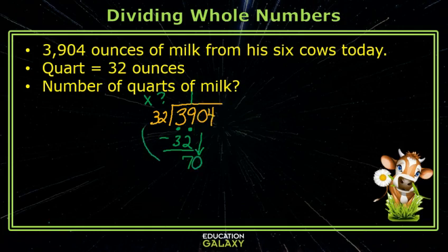Next we need to ask ourselves, how many times will 32 go into 70? I'm not sure, so I'm going to make a list of my multiples of 32. So 32 plus 32 is 64. If I add another 32, that is 96. So this is 32 times 1, 32 times 2, and 32 times 3. So 32 will go into 70 two times.